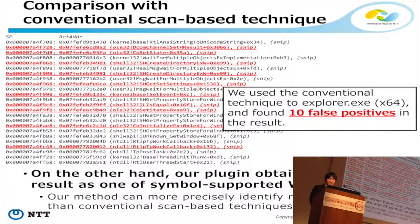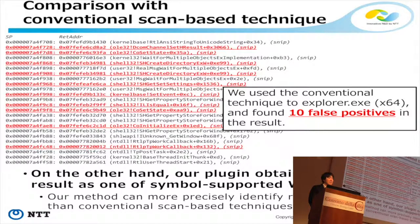Lastly, I compared our method with the conventional stack scan-based technique. We used the conventional technique on Explorer and found 10 false positives in the result — those entries are false positives. On the other hand, our plugin obtained the same result as the symbol-supported WinDBG. So our method can more precisely identify return addresses than conventional scan-based techniques.